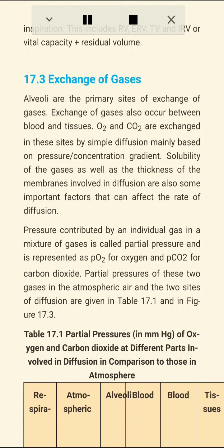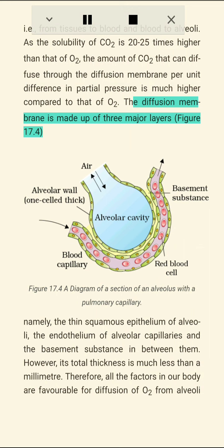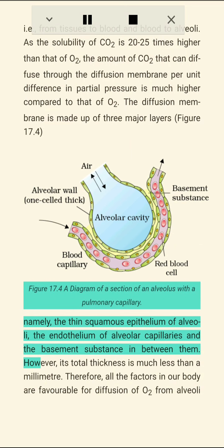The data clearly indicates a concentration gradient for oxygen from alveoli to blood and from blood to tissues. Similarly, a gradient is present for CO2 in the opposite direction — from tissues to blood and blood to alveoli. As the solubility of CO2 is 20 to 25 times higher than that of O2, the amount of CO2 that can diffuse through the diffusion membrane per unit difference in partial pressure is much higher compared to O2. The diffusion membrane is made up of three major layers: the thin squamous epithelium of alveoli, the endothelium of alveolar capillaries, and the basement substance in between them. Its total thickness is less than a millimeter.